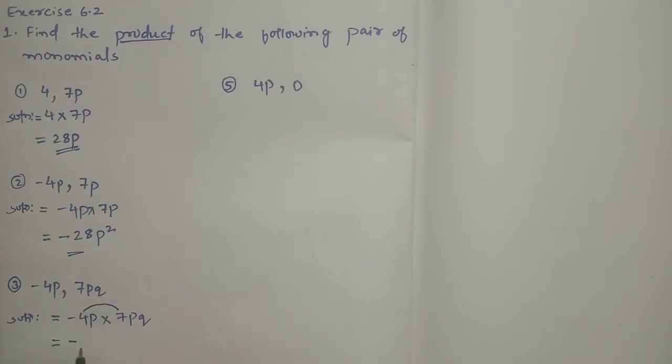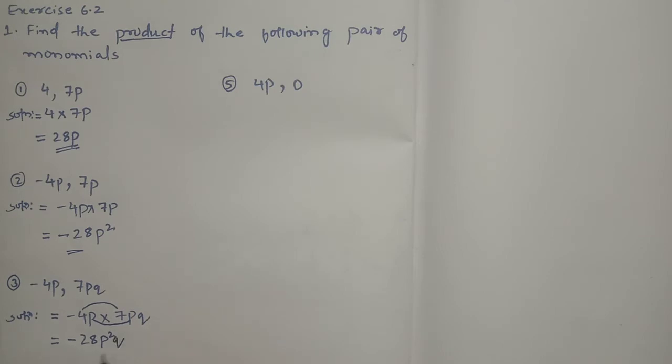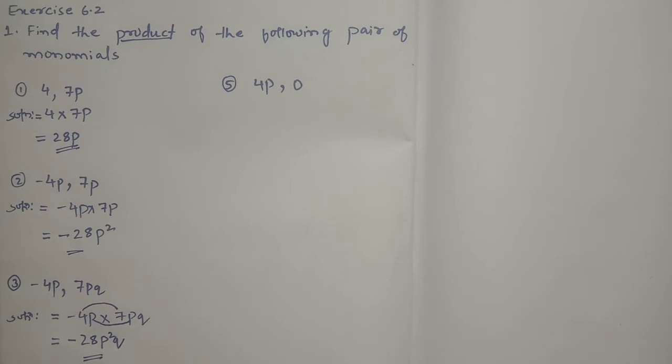4 sevens are 28. p into p³ will be p to the power 4. p into p is p², then this cube, so p⁴ is the answer.